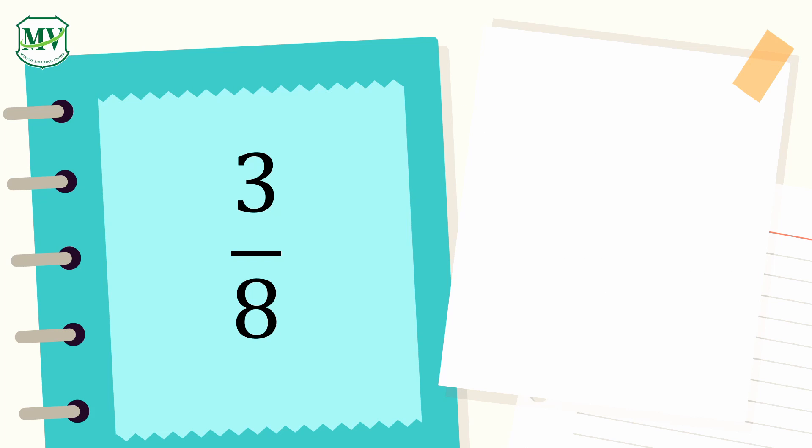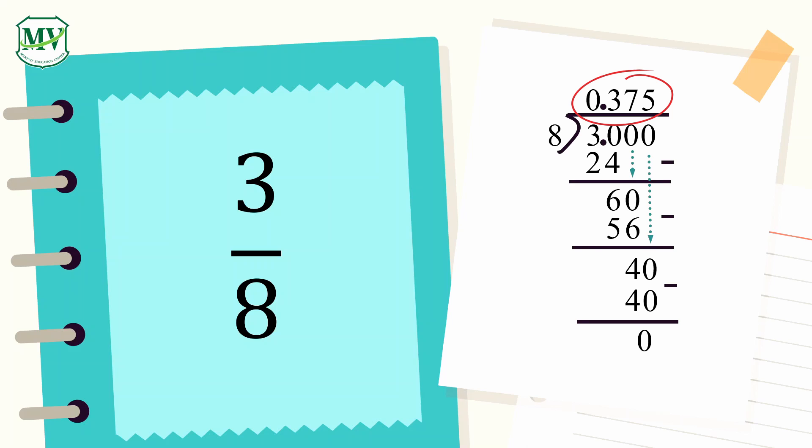Let's have more. Convert 3 eighths to a decimal. First, begin the long division. Next, add decimals and zeros as needed. Then, make sure all numbers are aligned. So, 3 eighths is equal to 375 thousandths.